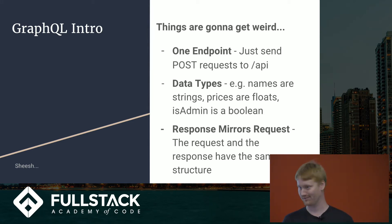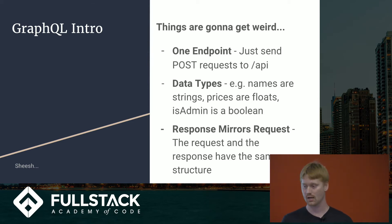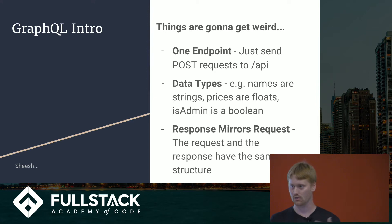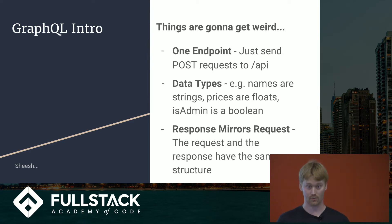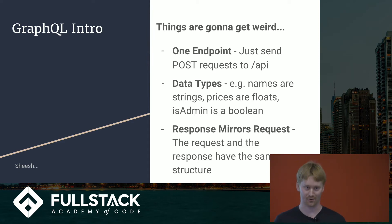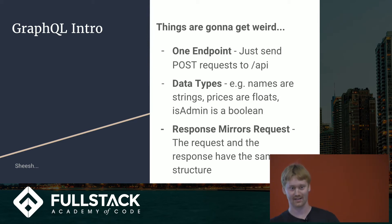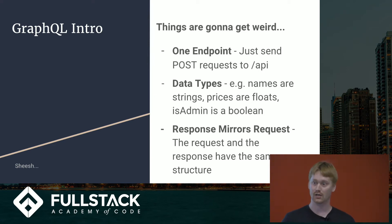There are data types in GraphQL, which is different. With REST, you might pass a user ID as a URL param and not really know if the server treats it as a string or a number — you don't particularly care. Likewise, when getting data back, you don't always know what to expect. With GraphQL, things are different: you actually have to specify the type of data you're expecting to get back, and GraphQL knows how to interpret that.